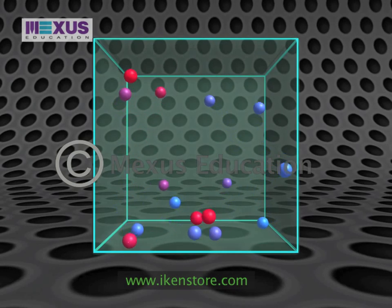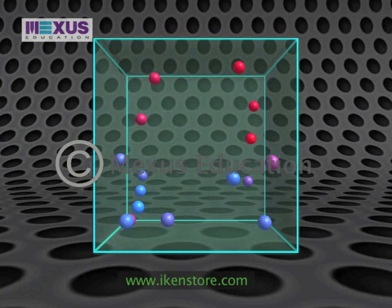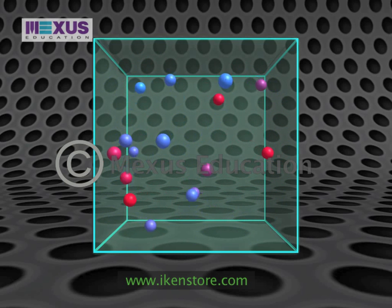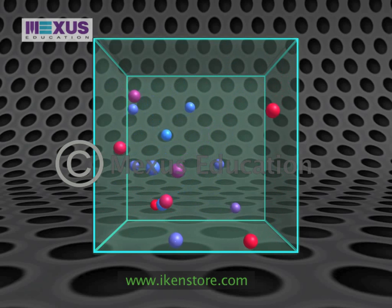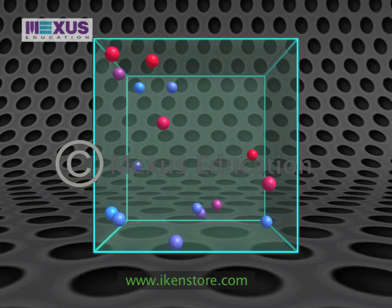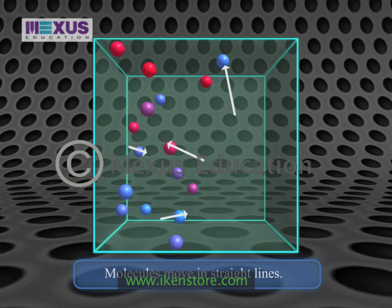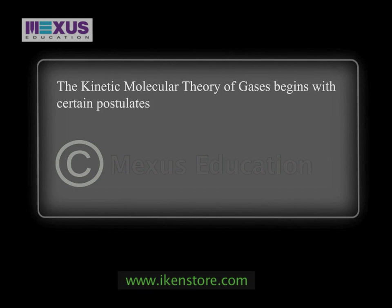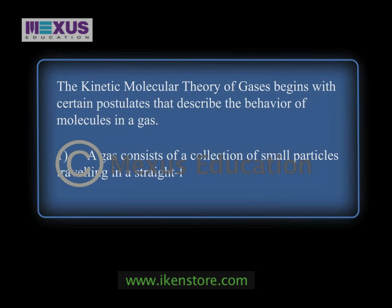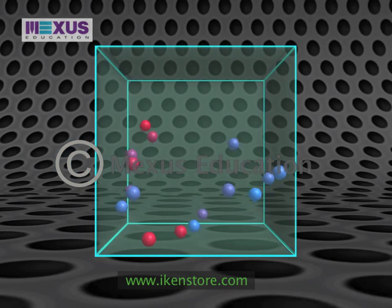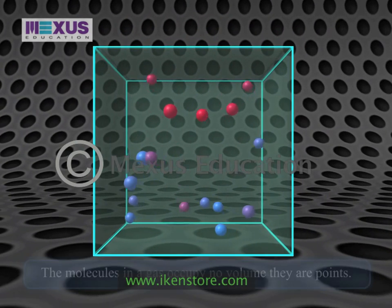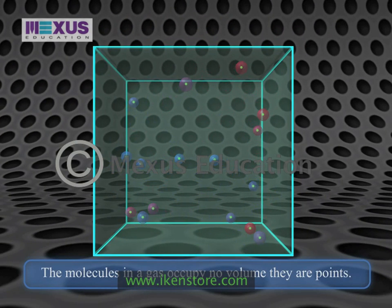The Kinetic Molecular Theory of Gases begins with certain postulates that describe the behaviour of molecules in a gas. First, a gas consists of a collection of small particles travelling in straight-line motion and obeying Newton's laws. Second, the molecules in a gas occupy no volume — that is, they are points.